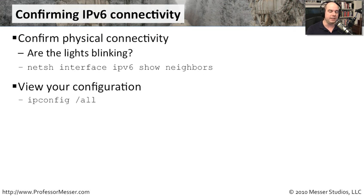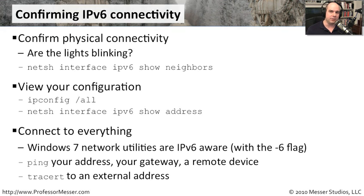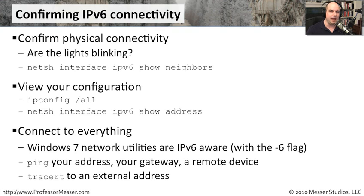Run ipconfig /all to view the full networking configuration. You can also run netsh interface IPv6 show address to confirm the addresses on your computer are what you expect. Then try connecting to other devices — ping or traceroute them. By default Windows 7 will try IPv4, so use the -6 flag with ping and traceroute to force Windows 7 to use IPv6 for those commands.